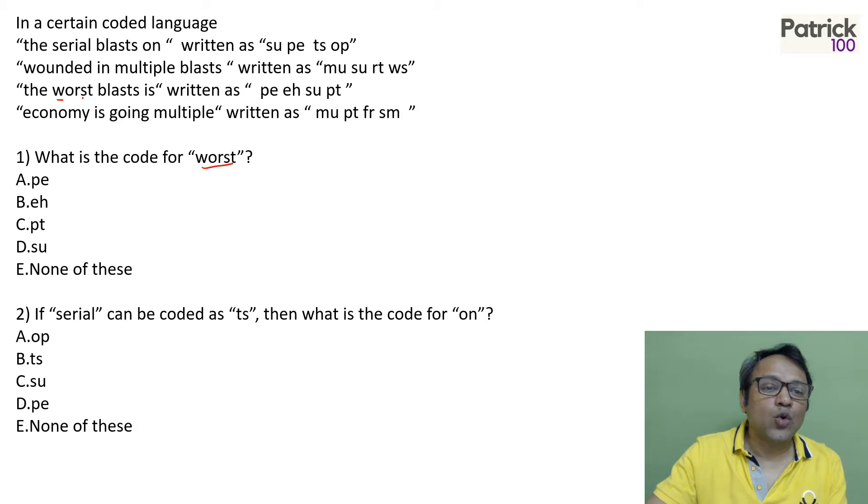So what is the code for worst? If you look at worst, worst is only in the third. There is nowhere else there is worst. Check for code which is there only in the third. So PE is on top, right?